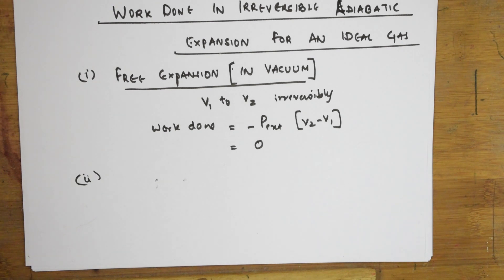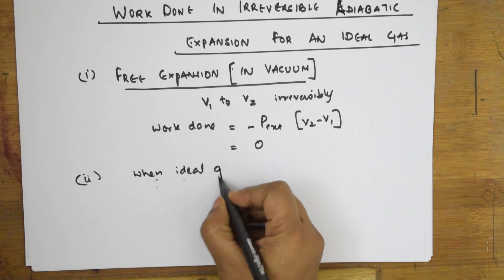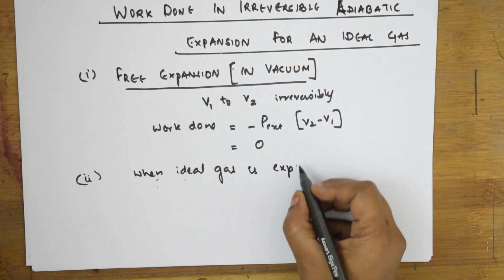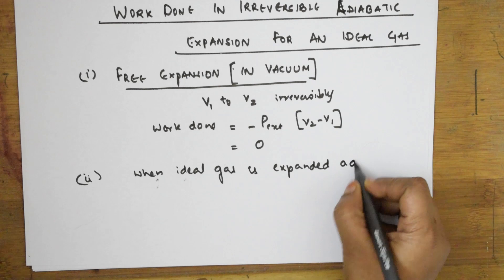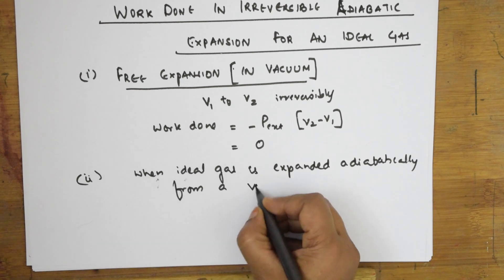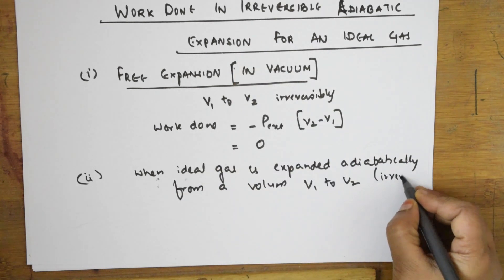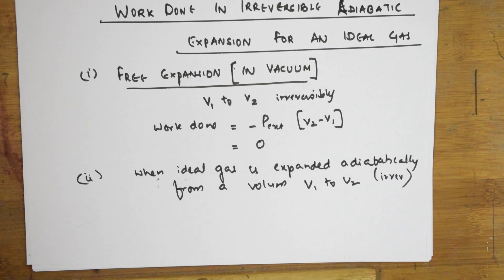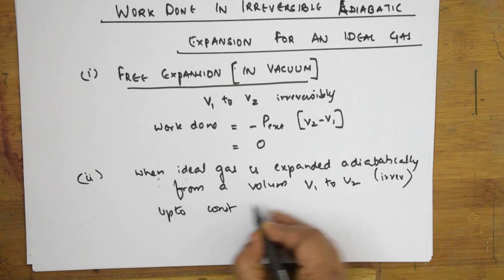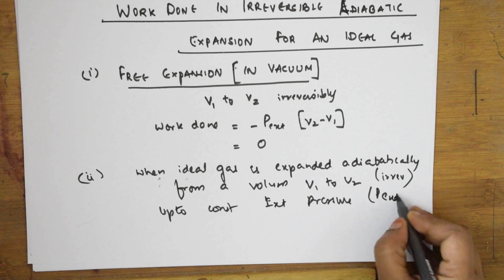Now we'll see what happens when an ideal gas is expanded adiabatically — that is, work done in an irreversible adiabatic expansion. When an ideal gas is expanded adiabatically from volume V1 to V2, the condition is that it should be irreversible in nature, and it expands against a constant external pressure.